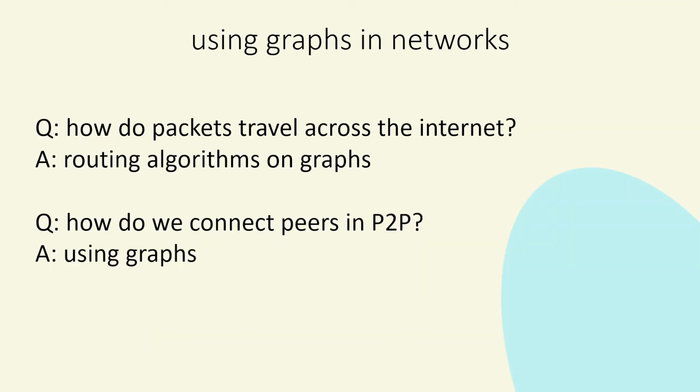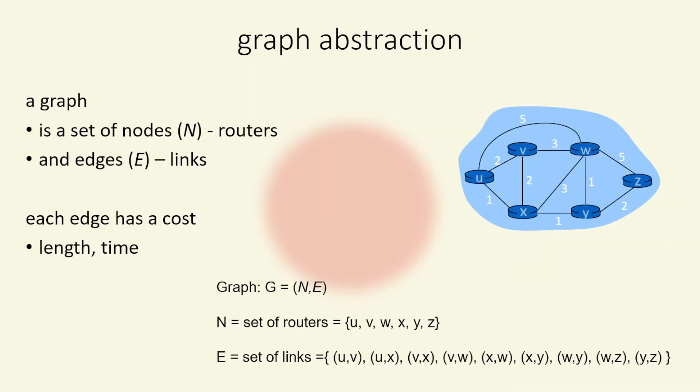We can also use graphs in networks. So how do we route packets around the internet? Well, we use routing algorithms and we use graphs. How do we connect peers in peer to peer? We again use graphs. So we use graph abstraction to calculate how we can do something. So here's an example. Here we've got a graph. We've got nodes, which are routers in real life and edges, which are links. So we can model a network.